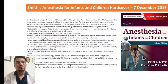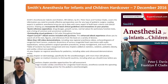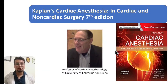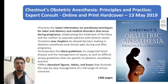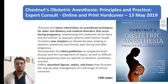For super-specialty books: Smith's Anesthesia for Infants and Children is a good reference book — you can have a PDF on your desktop or pen drive and refer to any difficult topic. Similarly, Kaplan's Cardiac Anesthesia is a concise book — the seventh edition is available, written by a professor of cardiac anesthesiology at the University of California San Diego. Whatever you encounter in cardiac anesthesia should be referred from this book. Chestnut's Obstetric Anesthesia covers A to Z of obstetric anesthesia; if you plan to do a fellowship in obstetric anesthesia, definitely get this book during your post-graduation itself.